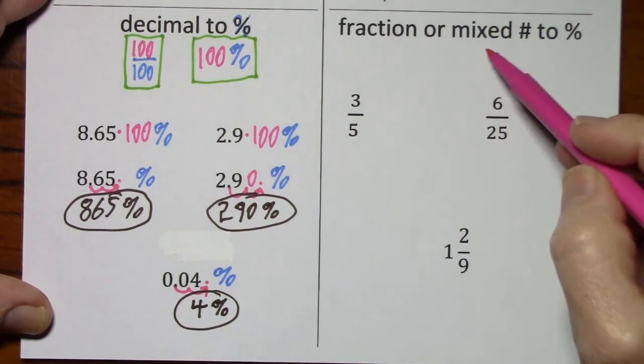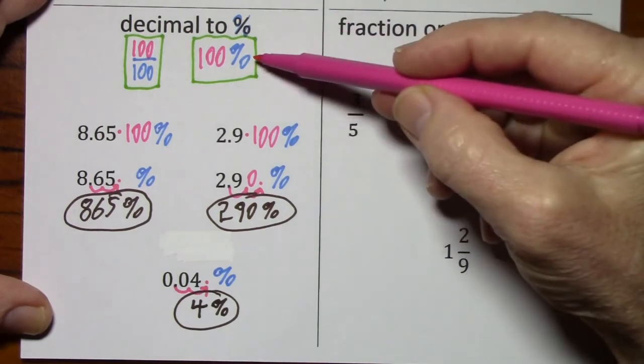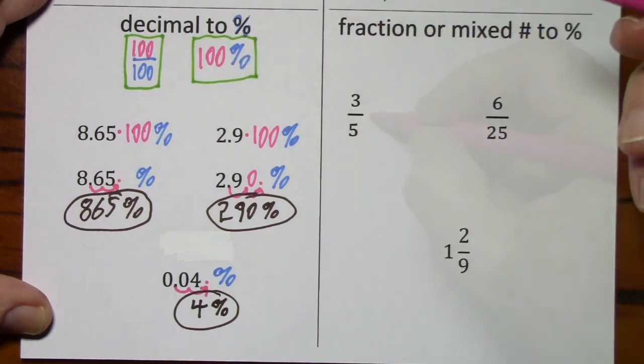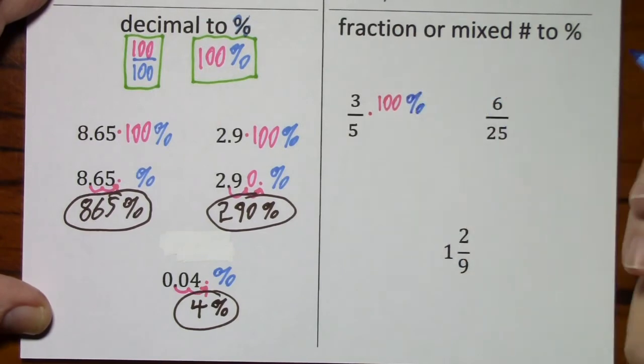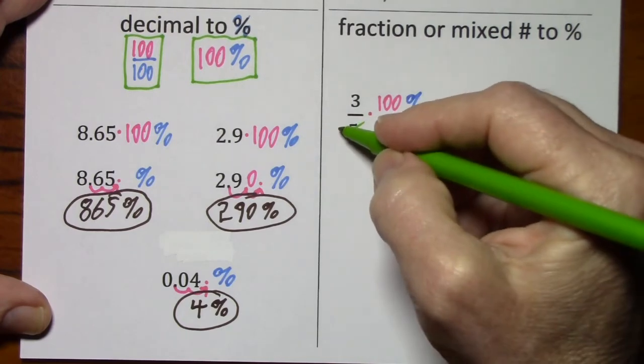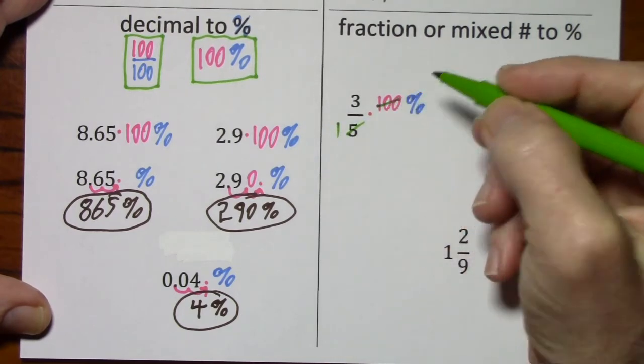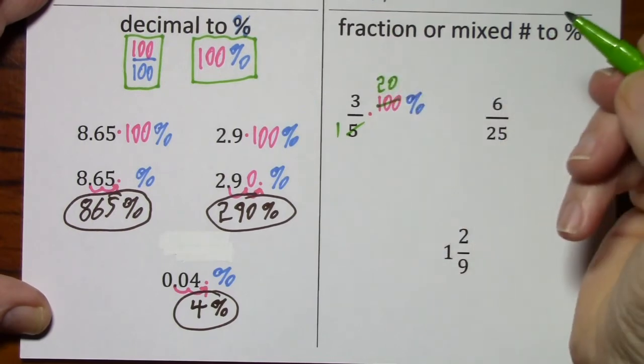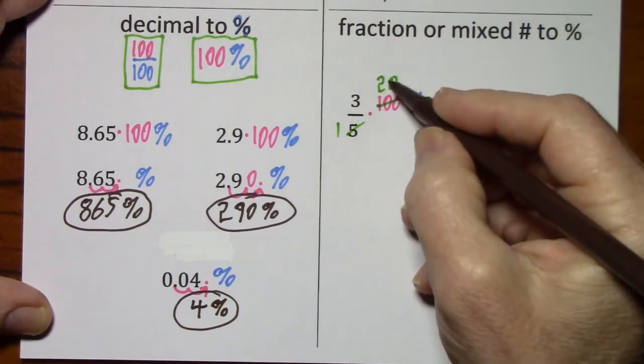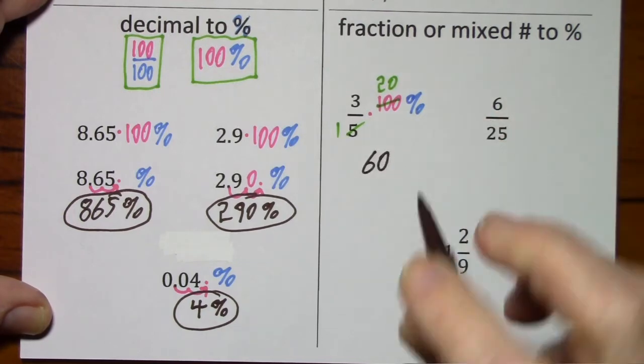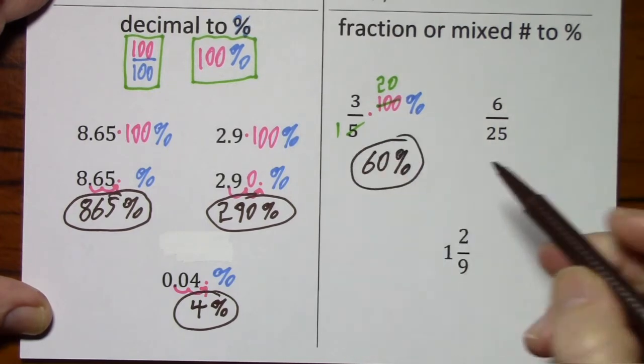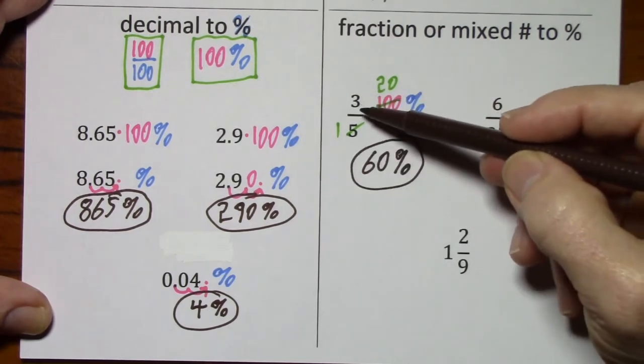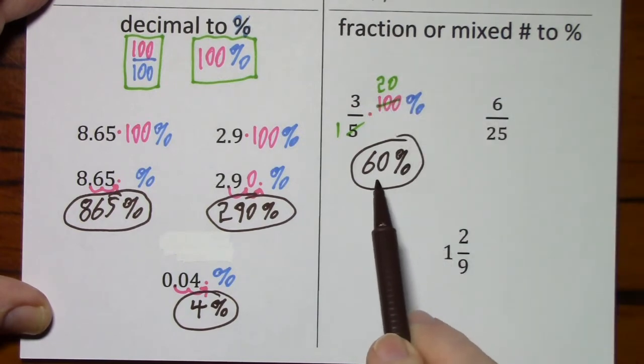So going from fraction or mixed number to percent, I'm still going to use this concept, multiply by 100%. So this is times 100%. But now I'm going to simplify if possible. Divide by 5 is 1, divide by 5 is 20. 3 times 20 is 60. And don't forget your percent sign. So the fraction 3 fifths is the same as the percentage 60%.